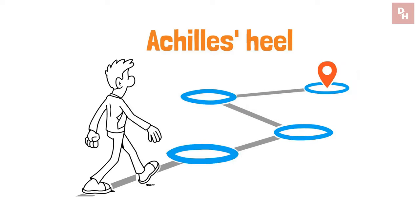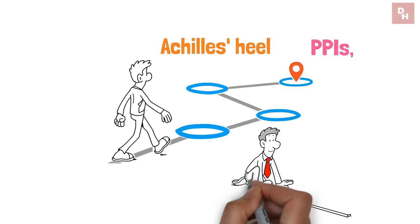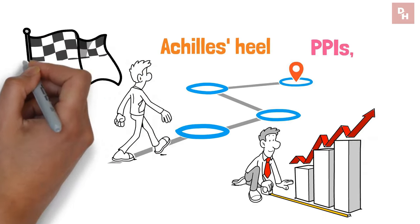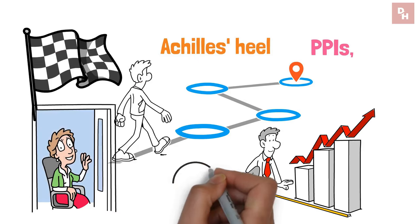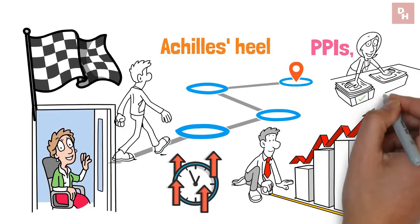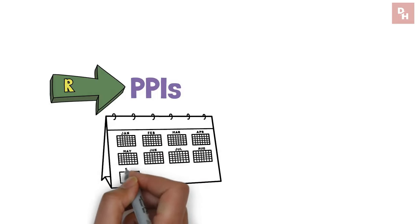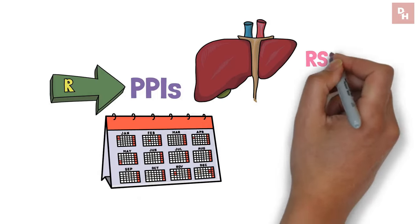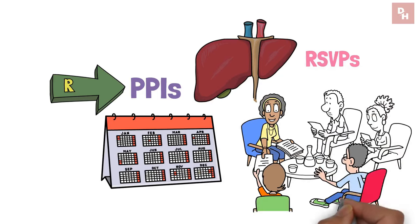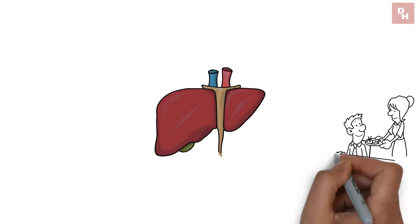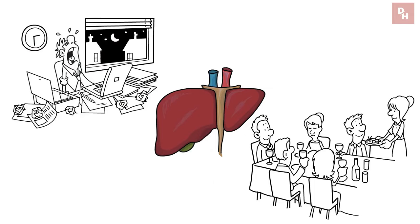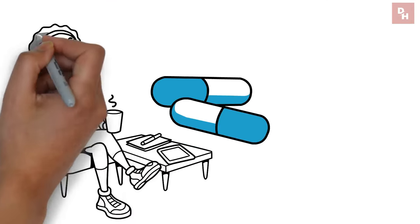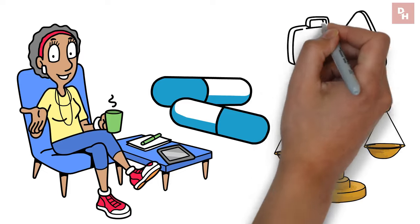But as we've learned on this journey, every hero has its Achilles heel. When it comes to PPIs, their long-term residency in our system raises a flag for liver health. It's a bit like having a really effective housekeeper who, over time, starts rearranging things you didn't want touched. In small, short-doses PPIs are fantastic. Stretch that over months or years, and your liver might start sending you RSVPs to meetings you didn't realize you'd scheduled. The liver, ever the diligent processor of what we ingest, can find itself working overtime with prolonged PPI use, leading to potential enzyme elevations and stress. It's a reminder that even the medicines we rely on to make life more comfortable need to be balanced with mindfulness towards our overall health.